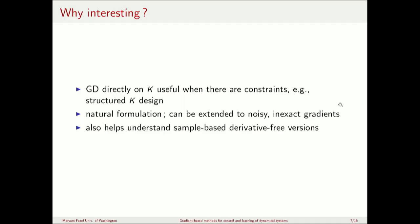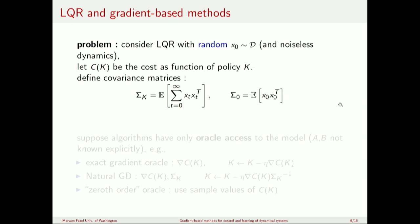Gradient descent directly on K is interesting because it allows imposing additional constraints on K — for example, structural constraints arising in network systems where certain actuators can only access certain information, as in distributed control. This formulation naturally views the cost as a function of K, and also helps understand the sample-based or derivative-free approach to solving the problem.